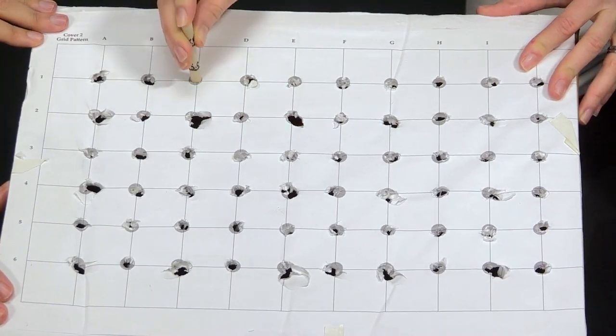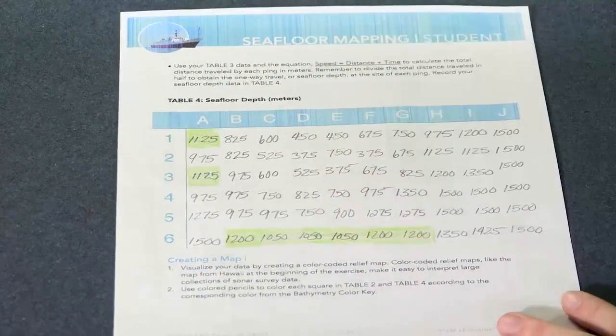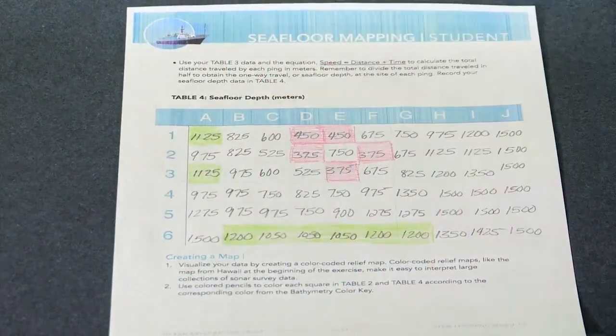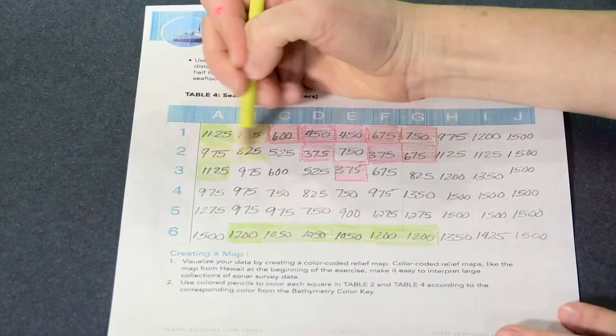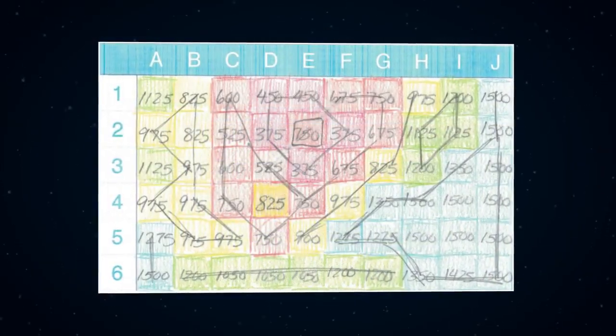Once the depth data table is completed, we can use the bathymetry color key to color in our student sheet and make our own rudimentary bathymetric map. Depth contour lines can be drawn in connecting points of equal depth to get an idea of the underwater terrain. Here is an example of what a map looks like with contour lines.